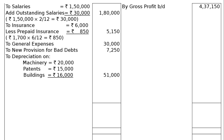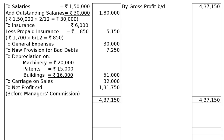And after that, to carriage on sales, that is Rs. 32,000. The total of the credit side is Rs. 4,37,150. We have to deduct all expenses to find out the net profit before manager's commission, because we have not yet calculated the manager's commission. That is Rs. 1,31,750.